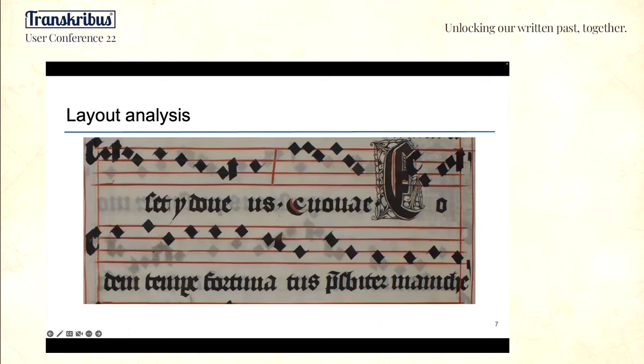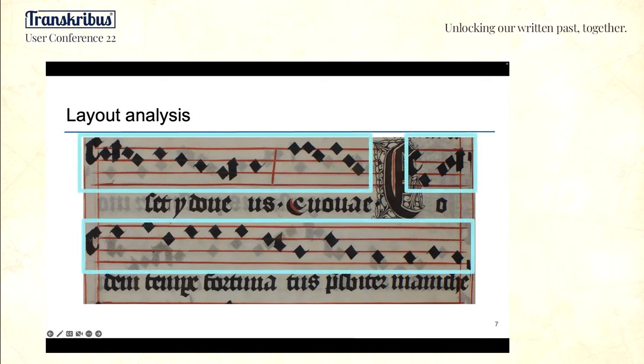Musical documents include different types of information. For the purpose of written music recognition we will be interested in two of these: the notes placed on staff lines and the lyrics which represent the text that must be sung.